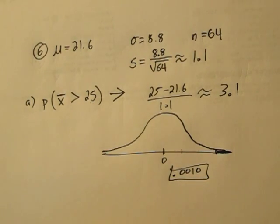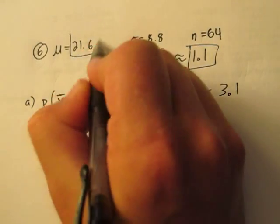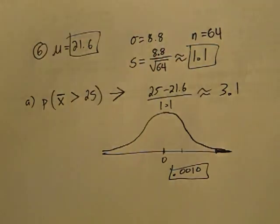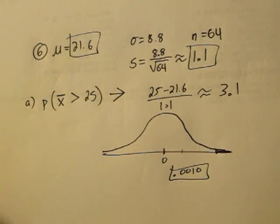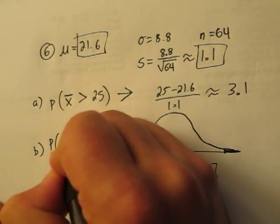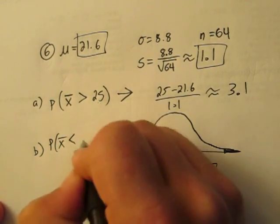Now we can use all of this information, these two bits of information here, in part b. In part b, we're interested in just the probability that it's less than 20, that the sample mean is less than 20.